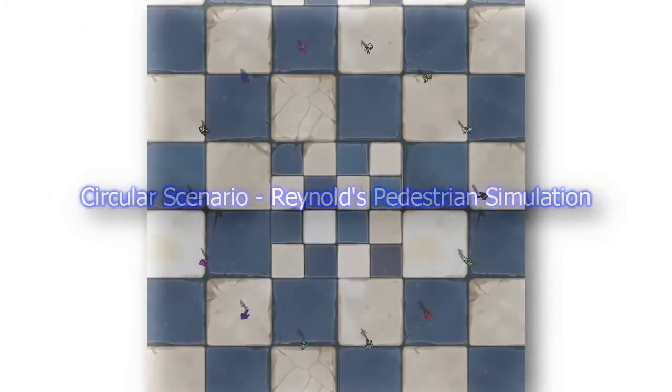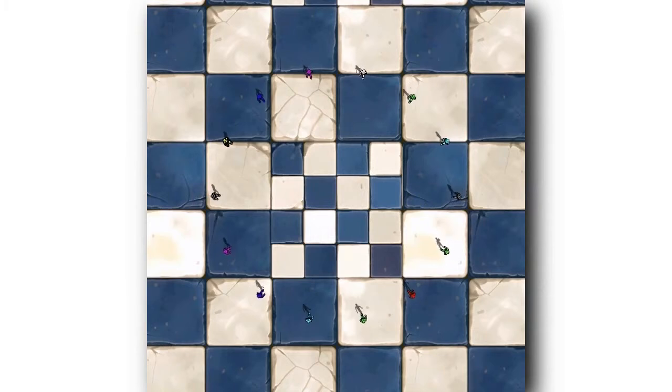Here we demonstrate the system operating synthetic input data from the OpenSTR framework. The input consists of 500 frames of 50 agents moving along straight paths avoiding each other.